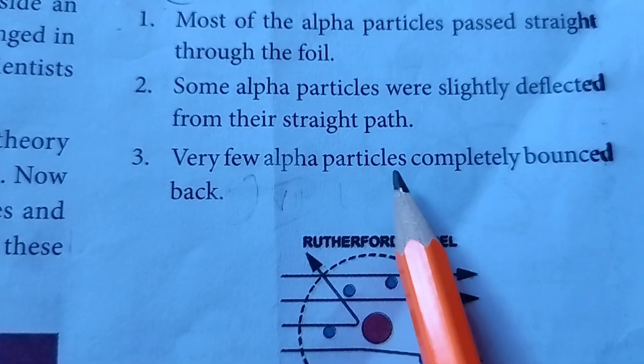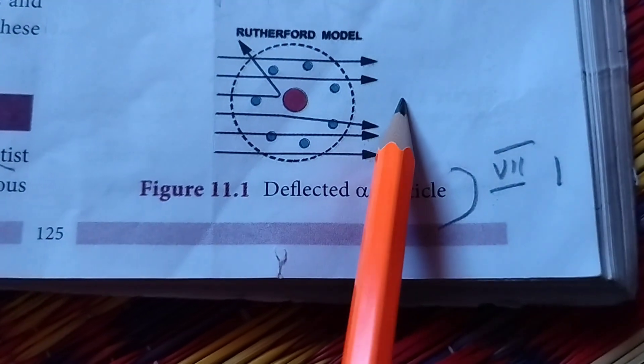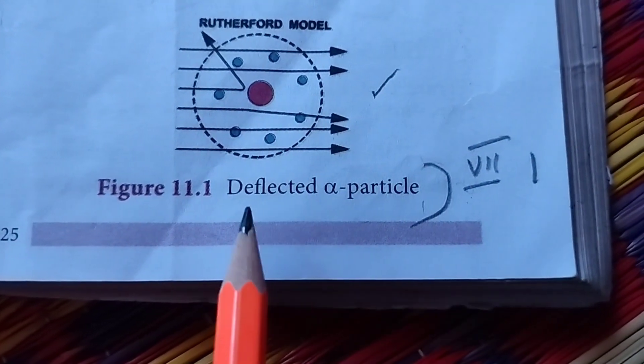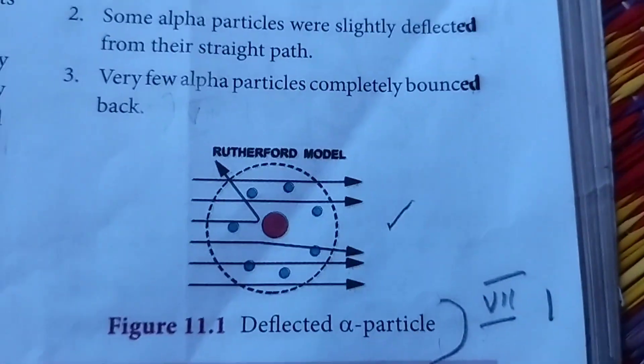Alpha particles are slightly deflected from their straight path. Third one. Very few alpha particles completely bounced back. In the diagram, let's see. Deflected alpha particle. This is the seventh row of the first question answer.